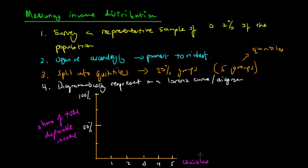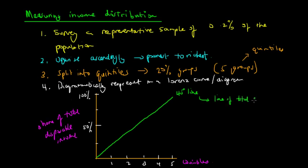The Lorenz diagram contains a 45-degree line, also called the line of total equality. This means the bottom 20% of people share 20% of the income, the second quintile also shares 20%, and so on — everyone shares the same proportion of national income. There is no inequality here; everyone has the same income along this 45-degree line.